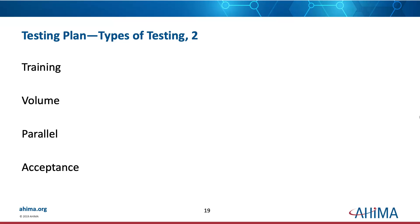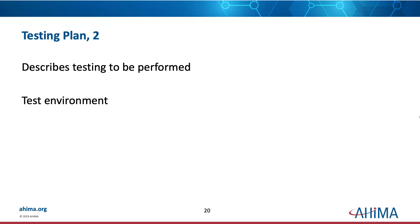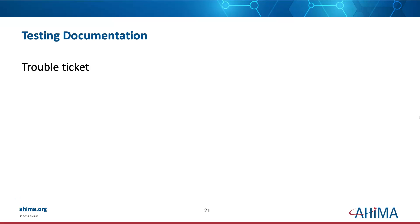Have you tested your training? The last thing you want is to get people in for training and find out your training materials or training system doesn't work — especially with providers, which will undermine their trust and support. Decide on the volume of testing and do parallel testing with multiple people running things simultaneously. At some point you need to sign off on acceptance either as the vendor or as the organization. The testing plan needs to describe exactly what testing will be performed, the test environment, and what happens if you run into trouble — how you document it, resolve it, and follow up.